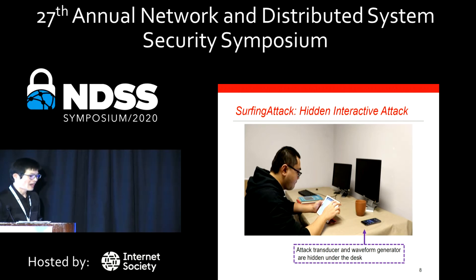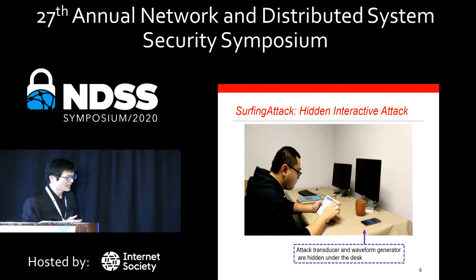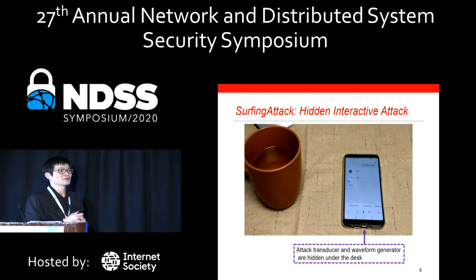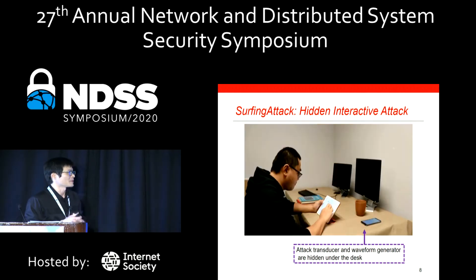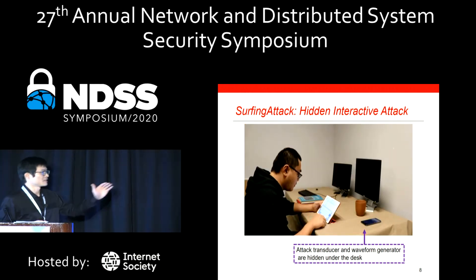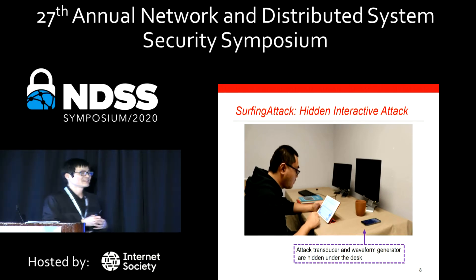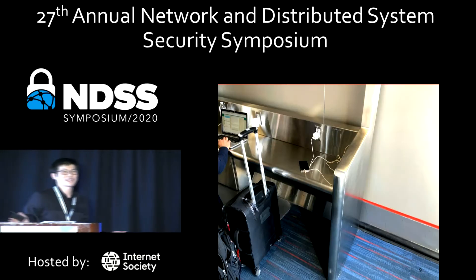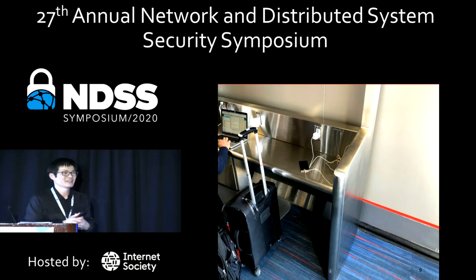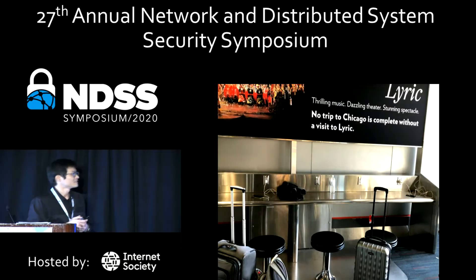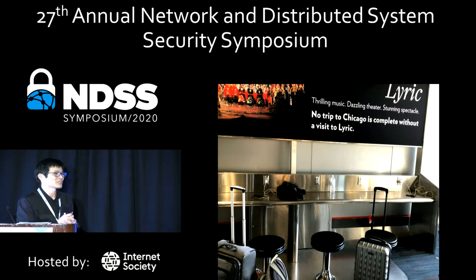Surfing Attack also enables a hidden interactive attack. We conceal the attack device under the table, covered by a tablecloth. The attacker first turns down the volume of the device to make it less alarming, then tries to call someone. Without making any noise, the phone starts calling the owner's friend. There are no vibrations because the vibration of the ultrasonic guided wave is ultra-minor, so you cannot hear or sense anything. I just came from the Chicago airport and took a random picture showing people putting their phones on the metal table unattended. This metal table is a perfect medium for the Surfing Attack.